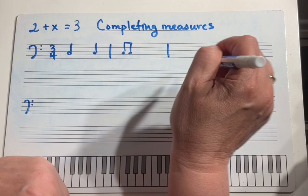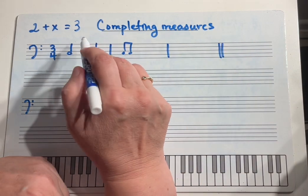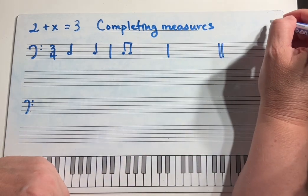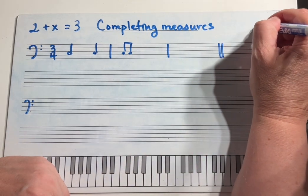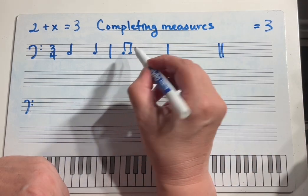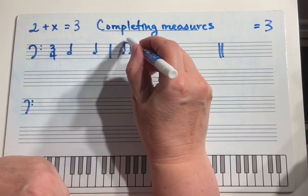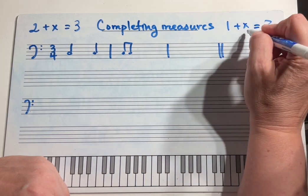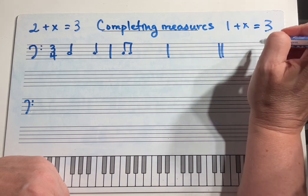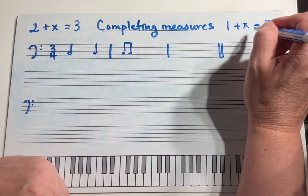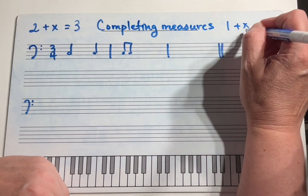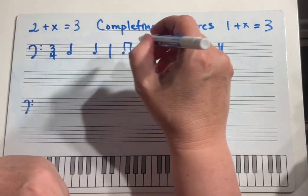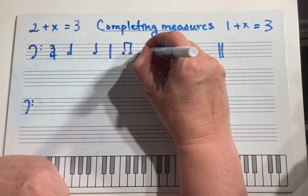We're going to come back to maybe one or two measures to talk about why x can also be something different. Next equation — we want our measure to be three. And we have two eighth notes, which we know together equals one beat, so now x is something else. You look at the numbers, it's super easy — x needs to be two in order to complete your equation. So then we need our note value that is two beats, which is a half note.